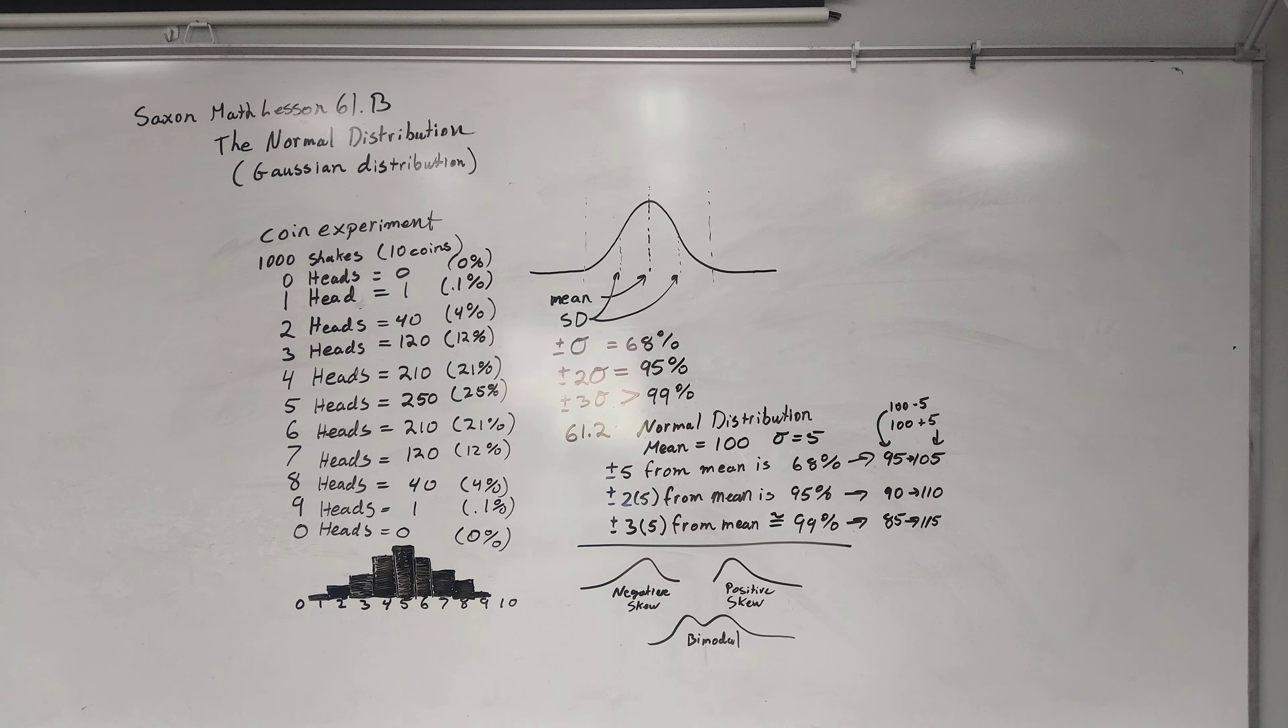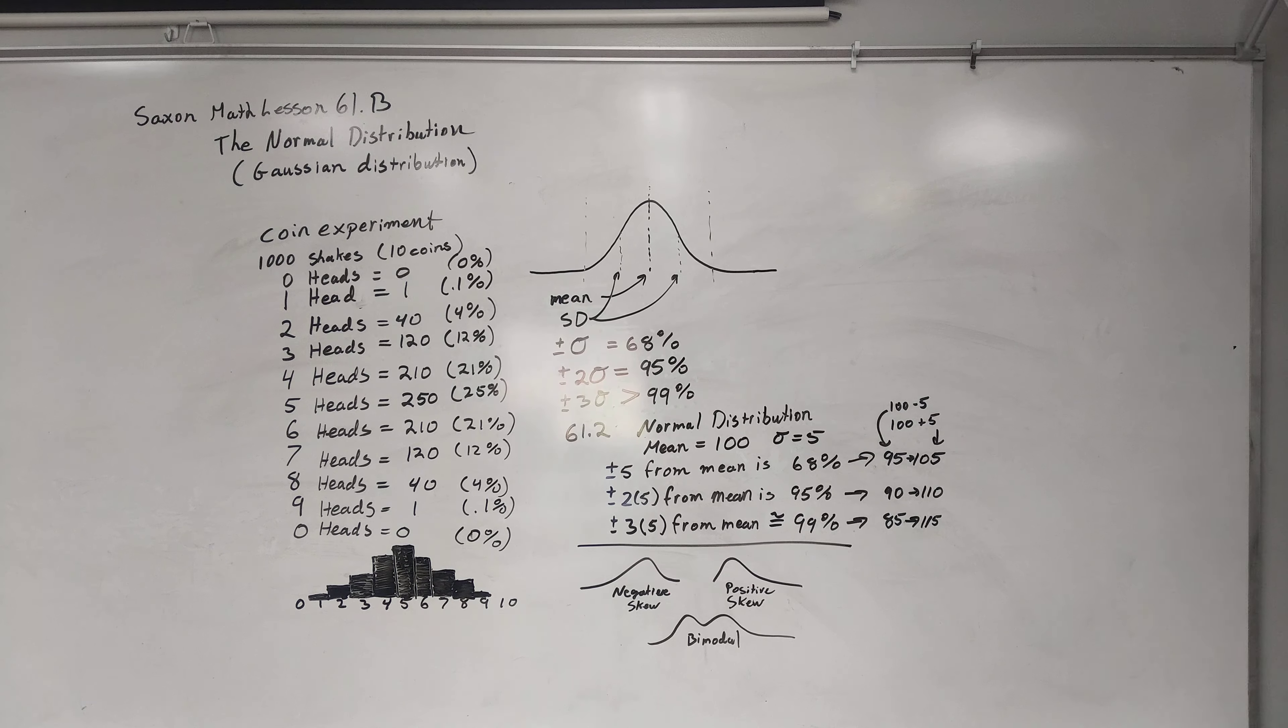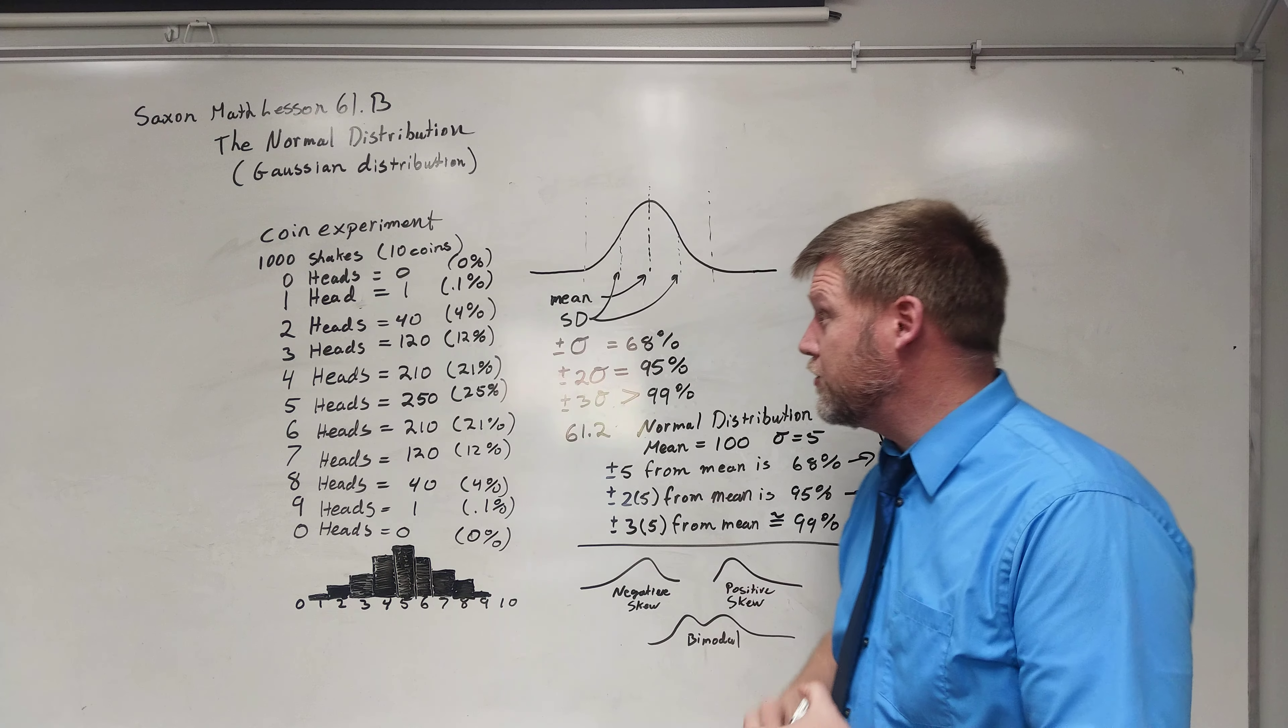Saxon Advanced Math, Lesson 61.b. This is normal distribution. Another word for that is Gaussian distribution.